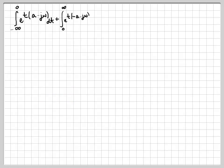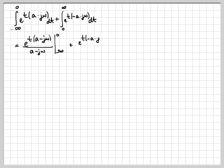Let's recopy that last step and go ahead and do the integration. Integrating an exponential is easy — it's just the exponential divided by the derivative with respect to t of the argument. Since the argument of the first exponential is t times (a - jω), the derivative with respect to t is just (a - jω). We evaluate this at 0 and minus infinity. Similarly, the second term is the exponential divided by its argument's derivative, evaluated at infinity and 0.